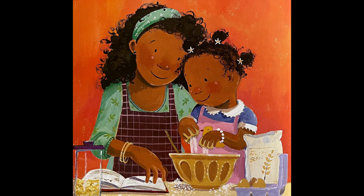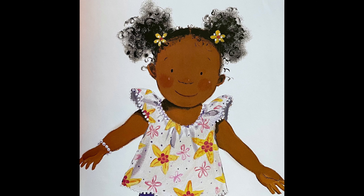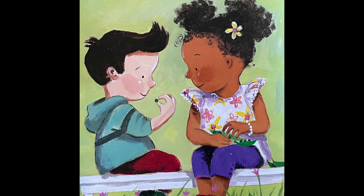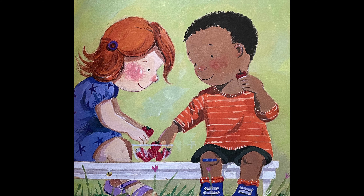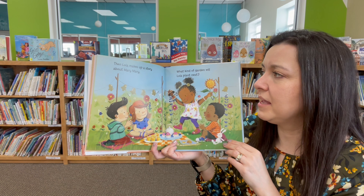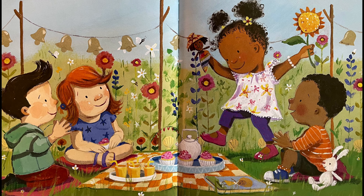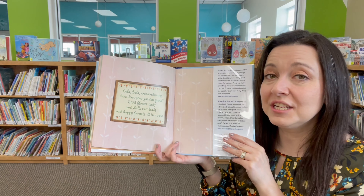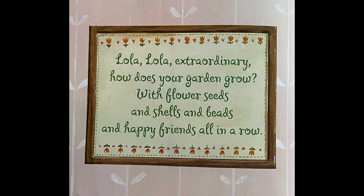Orla, Ben and Ty are coming to see Lola's garden. Lola and Mommy make cupcakes. Lola wears her flower shirt and Mommy helps Lola with her hair. Lola's friends love everything about her garden. They share the crunchy peas and sweet strawberries that Mommy grew. Then Lola makes up a story about Mary, Mary. What kind of garden will Lola plant next? Look at all the beautiful flowers she has growing in her garden. And she has her own poem: Lola, Lola, extraordinary, how does your garden grow? With flower seeds and shells and beads and happy friends all in a row. The end.